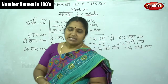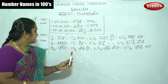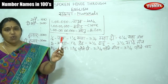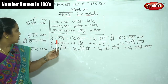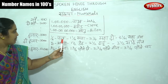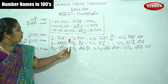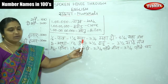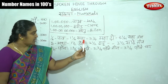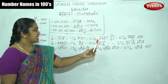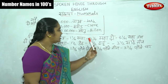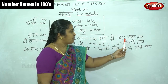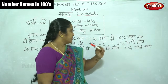Now we look at number fractions. In English we say quarter — one by four is called Paav. One and one-quarter is Sava, two and one-quarter is Sava Do, three and one-quarter is Sava Teen.